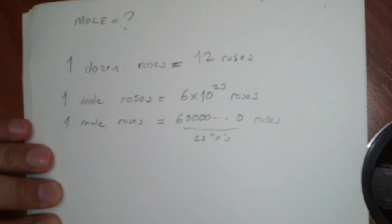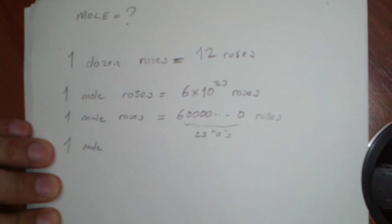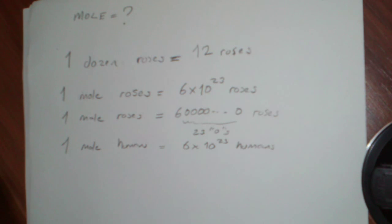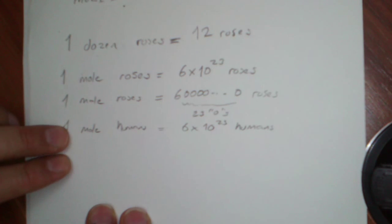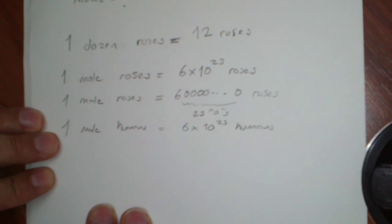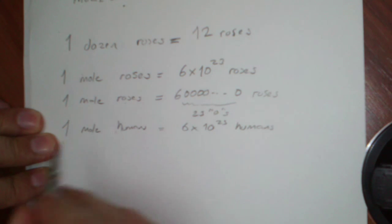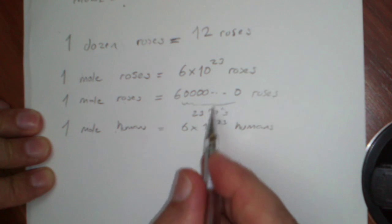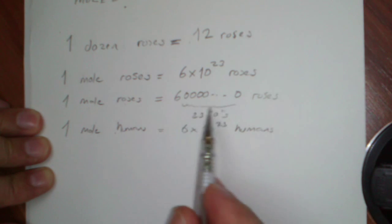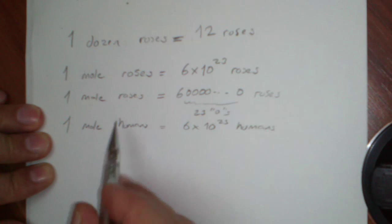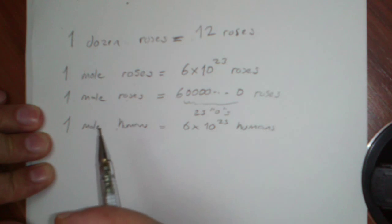We have no fault here. We may even write down 'one mole humans.' There is no mistake here. But six times ten to the power of twenty-three humans is a very, very large number. How will you deal with that number of humans? Since mole is such a large counting number — unlike dozen which is only twelve — we better count not roses, not humans with mole, but very, very small things with mole.